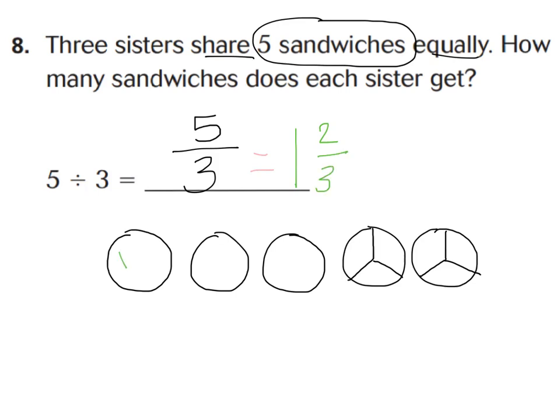Here's why: each sister gets one sandwich each, because there are three whole sandwiches. There are two sandwiches left over, so I cut them into thirds because there are three sisters to share them. One sister gets one-third from each leftover sandwich — one-third plus one-third is two-thirds. So a sister will get one whole sandwich and two-thirds.